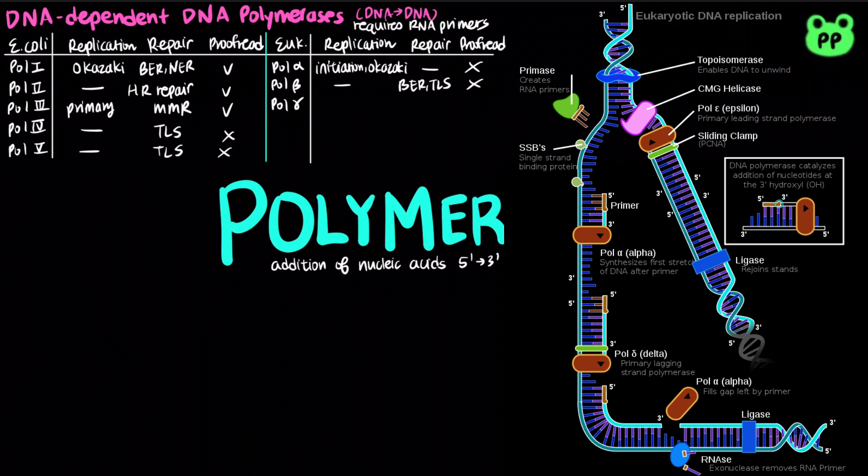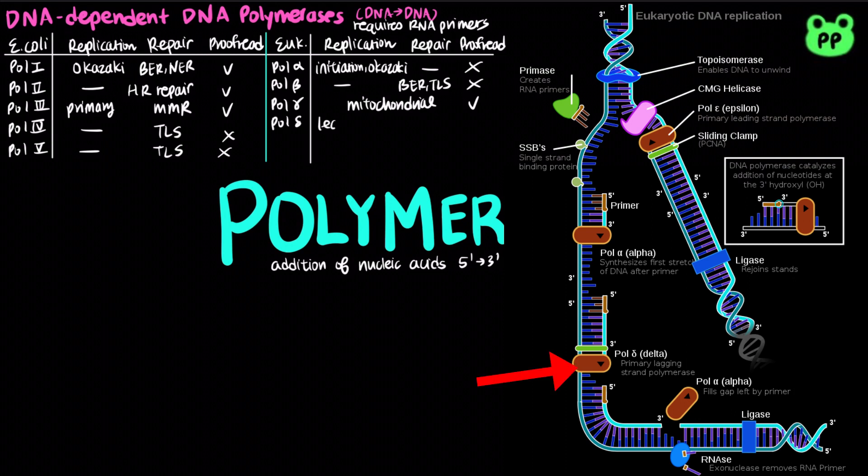DNA polymerase gamma is involved in mitochondrial replication and repair, and it contains proofreading activity.